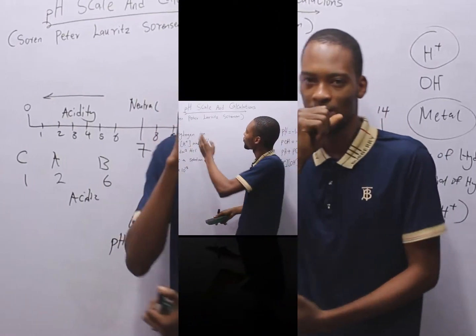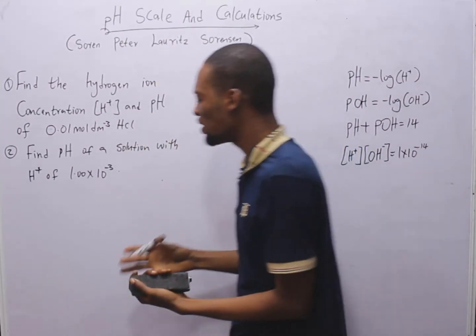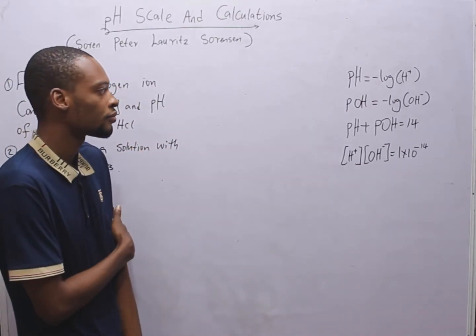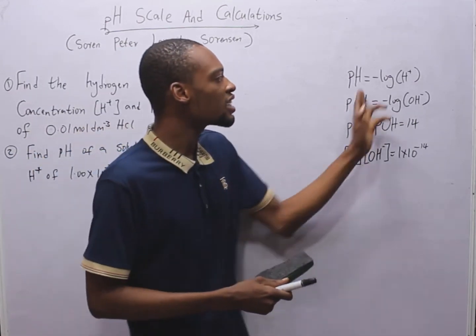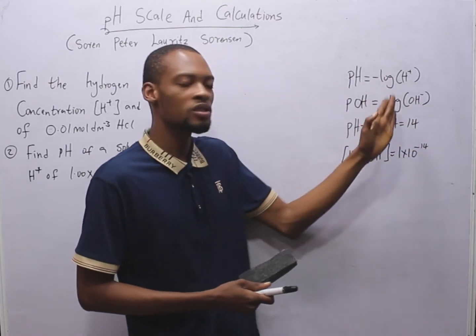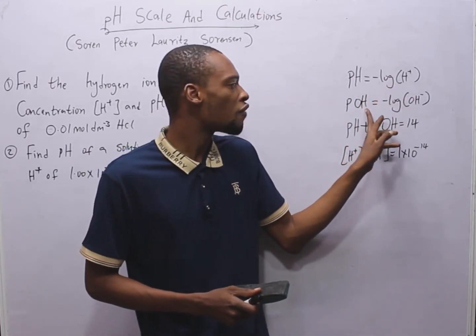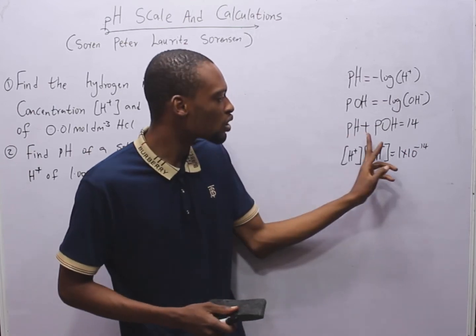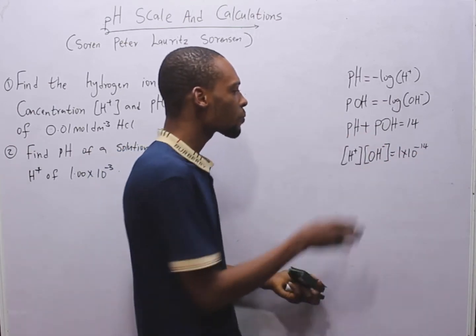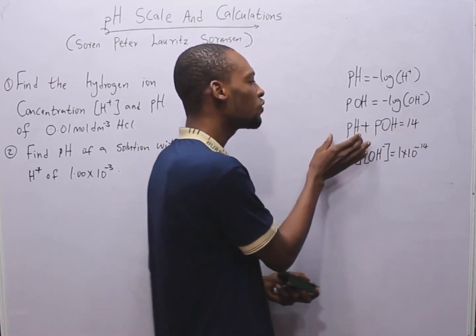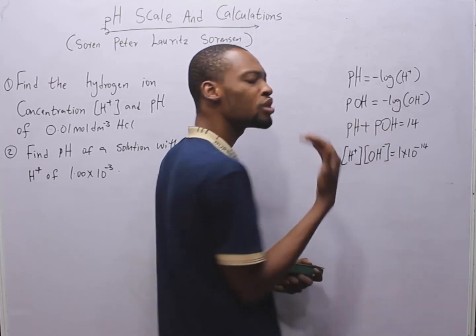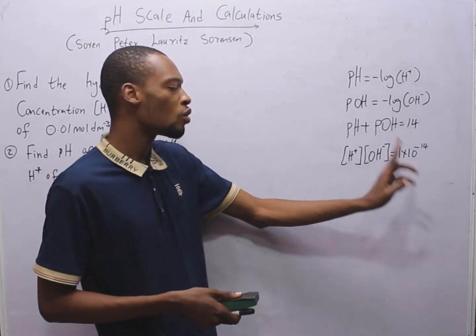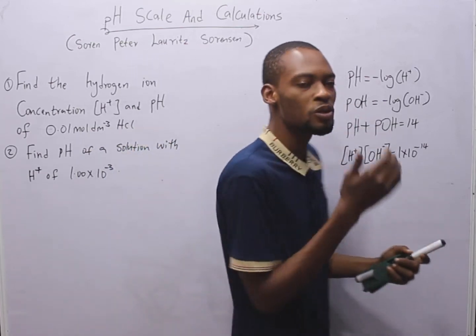The pH concept was first used or coined or discovered by Soren Peter Lawrence Sorensen. And note that pH is negative log of hydrogen ion or minus log of H plus. pH plus pOH is equals 14. So if you are given the pH of a solution and you are asked to look for the pOH, pOH is simply 14 minus the pH you are given. And H plus times OH minus is equals 1 times 10 to the power of minus 14. So take note of these formulas because you may need them for calculations.